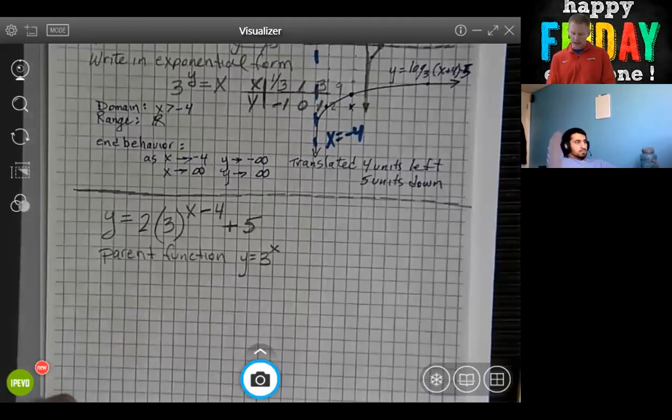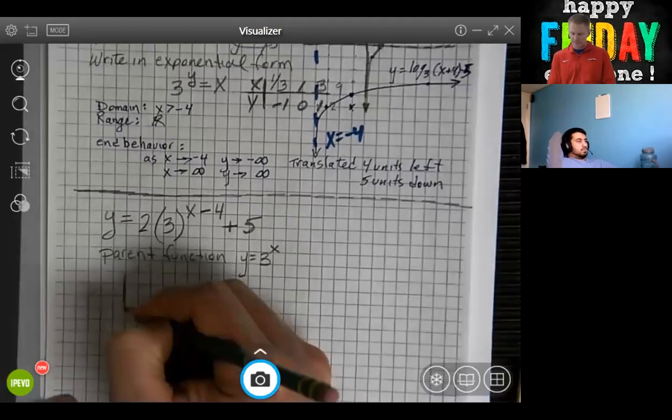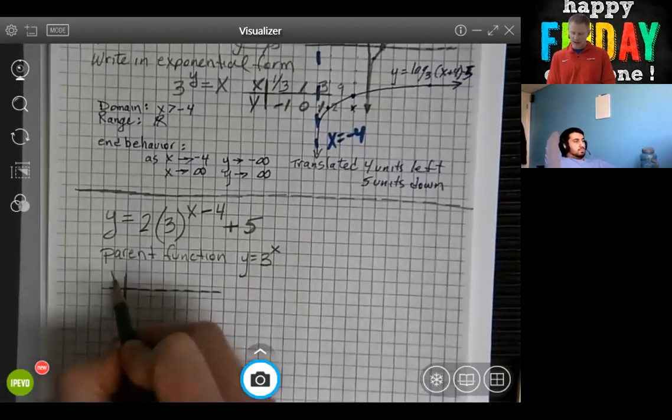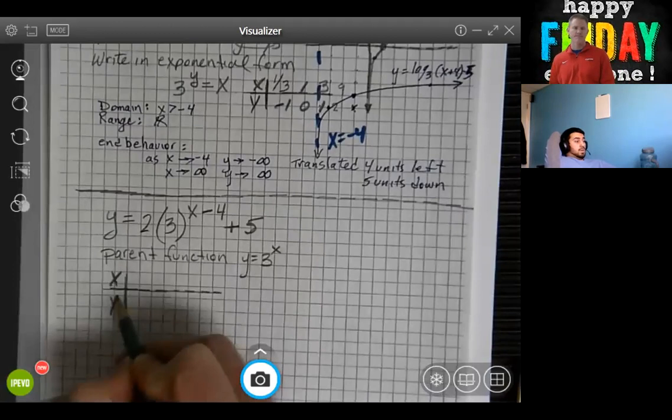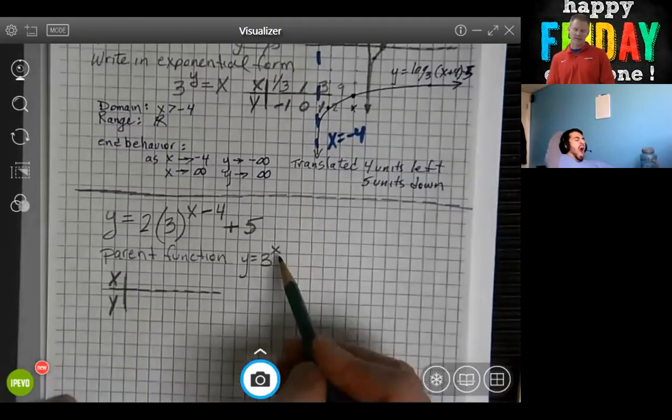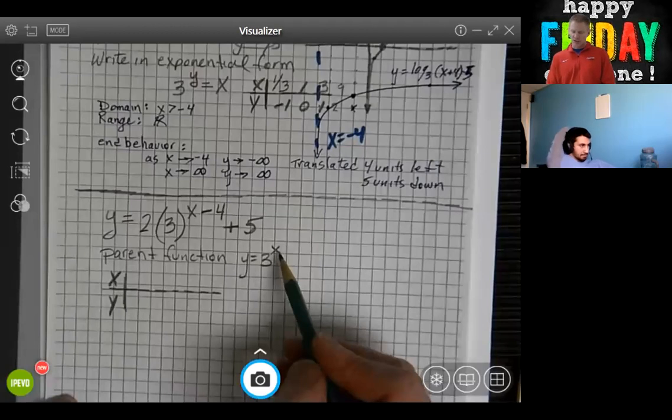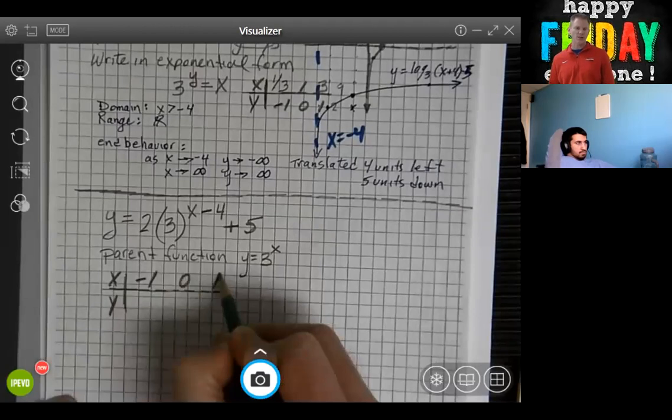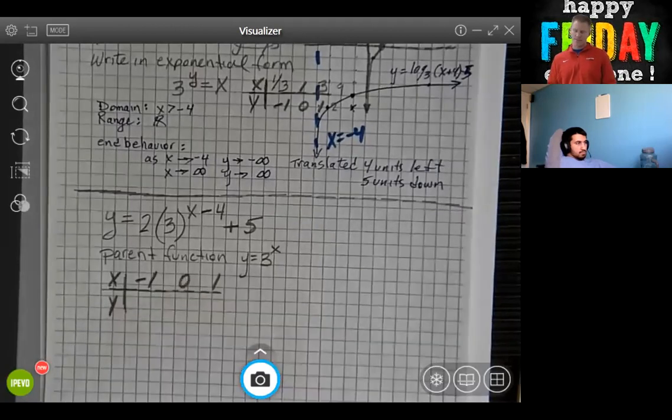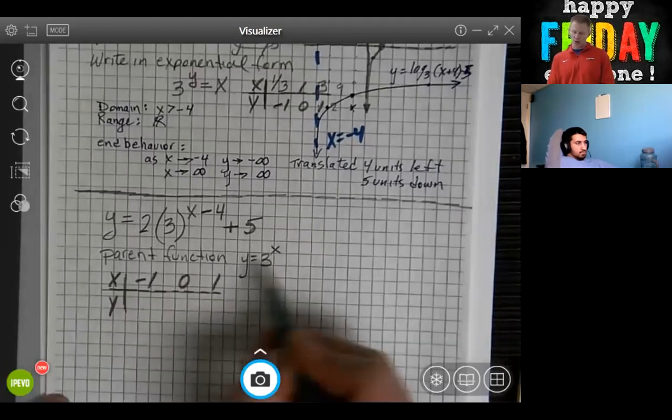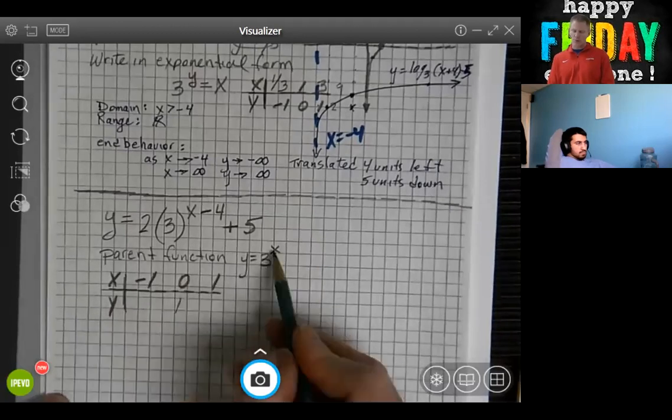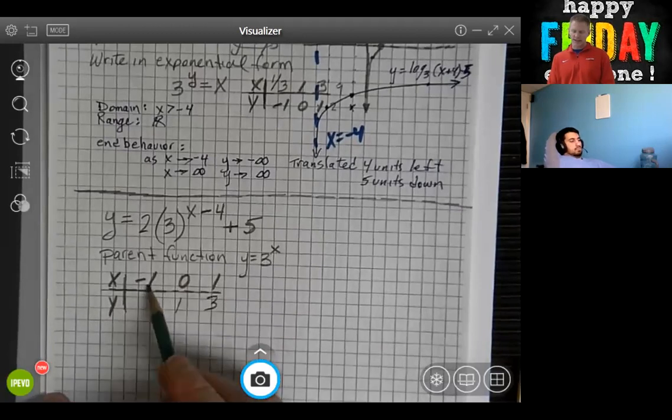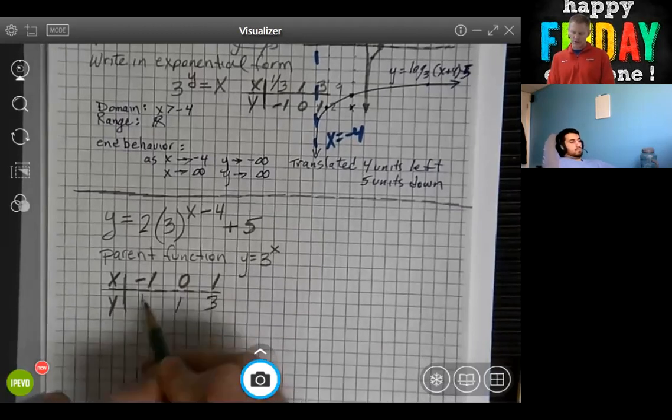which is y equals 3 to the x power. So that's going to help us make our table. We have x's and we have y's. Now look at your exponent. The exponent is the x. So those are the values we're picking our negative 1, 0, 1. Whenever we have 0, we get a value of 1. Whenever we have 1, we get our base. Whenever we have negative 1, we get the reciprocal of the base.